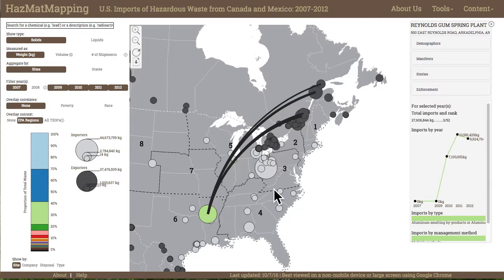She then clicks on the proportional symbol to view the flows of waste to this site. The resulting flowlines show heavy trade between the Arkansas site and several export sites in Quebec, Canada. This pattern surprises the permit manager, as given her jurisdiction in the South Central U.S., she expected most of the waste to come across the West Mexico border. Intrigued by the site-level patterns, she next wants to see how the pattern in solid waste imports holds up at a state level.